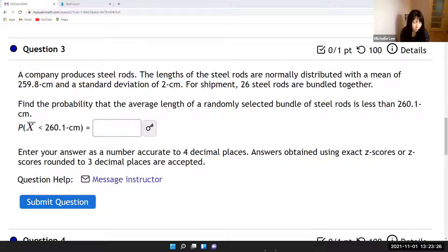So here is the question: a company produces steel rods. The length of steel rods are normally distributed with a mean of 259.8 centimeter and standard deviation of 2 centimeter for shipment. 26 steel rods are bundled together. Find the probability that the average length of a randomly selected bundle of steel rods is less than 260.1 centimeter.